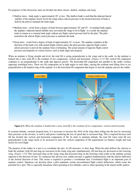Shallow turns have a bank angle of approximately 20 degrees or less. This shallow bank is such that the inherent lateral stability of the airplane slowly levels the wings unless aileron pressure in the desired direction of bank is held by the pilot to maintain the bank angle. Medium turns result from a degree of bank between approximately 20 degrees and 45 degrees. At medium bank angles, the airplane's inherent lateral stability does not return the wings to level flight; the airplane tends to remain at a constant bank angle without any flight control pressure. Steep turns result from a degree of bank of approximately 45 degrees or more. The airplane continues in the direction of the bank even with neutral flight controls unless the pilot provides opposite aileron pressure to prevent the airplane from overbanking.